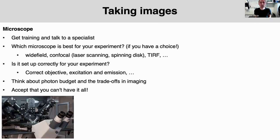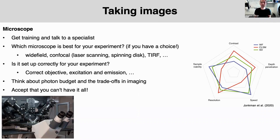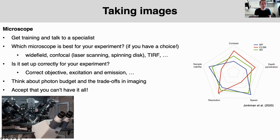Which microscope should you use? If you have a facility with lots of different types, you can think about what each system gives you. Wide field microscopy is really good on speed, whereas confocal laser scanning microscopy is not as fast due to the way it scans the image. Confocal is better on resolution than wide field. If you need speed, you need a fast imaging modality; if you need resolution, perhaps you need to sacrifice speed.